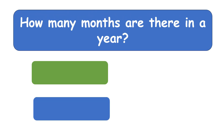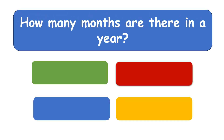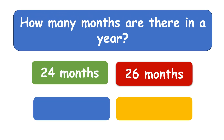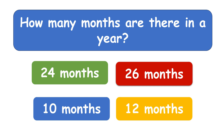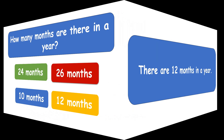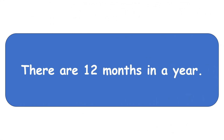How many months are there in a year? Twelve months. There are twelve months in a year.